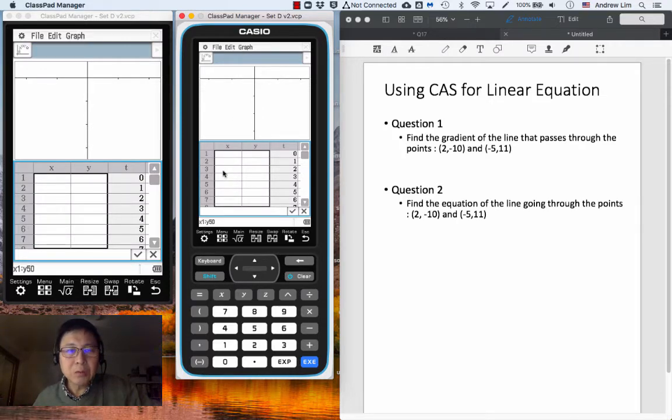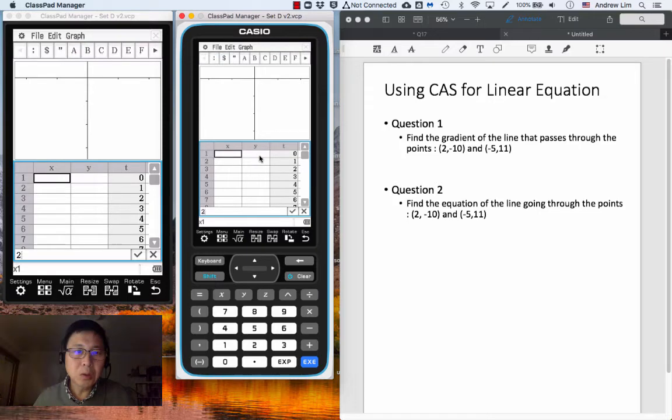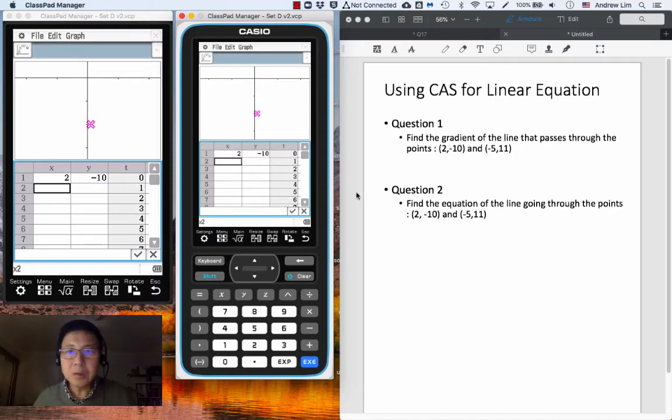And what we are going to do is write the two points on - this is point 1 and this is point 2. So we have x, y. The first point is 2, minus 10. So let's key in 2 and minus 10 here. And the second point is minus 5, 11. So minus 5, and the y is 11.